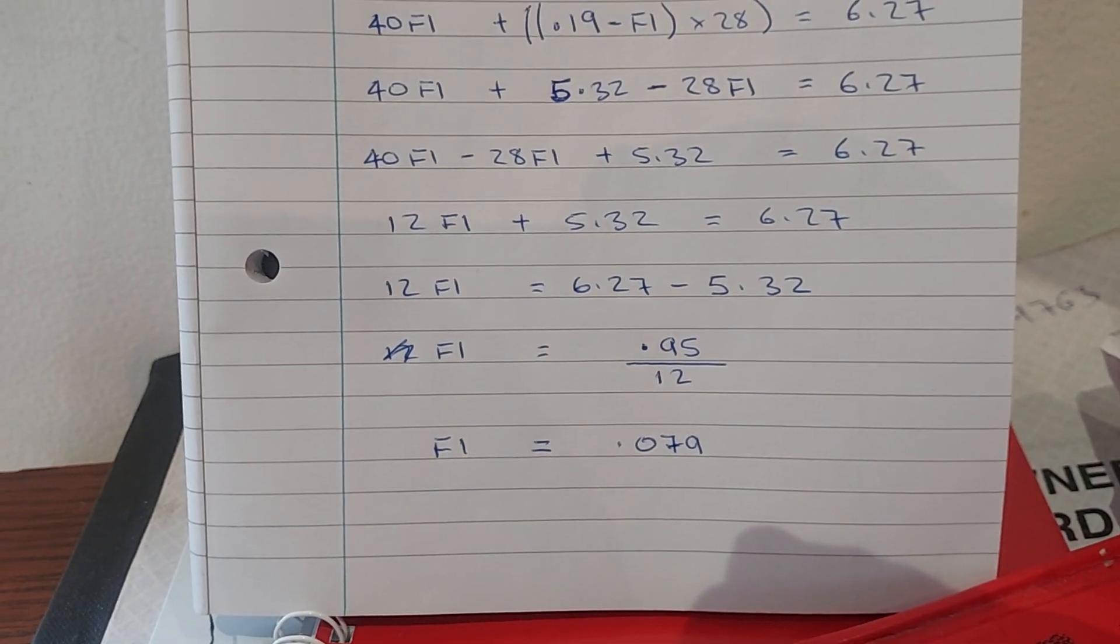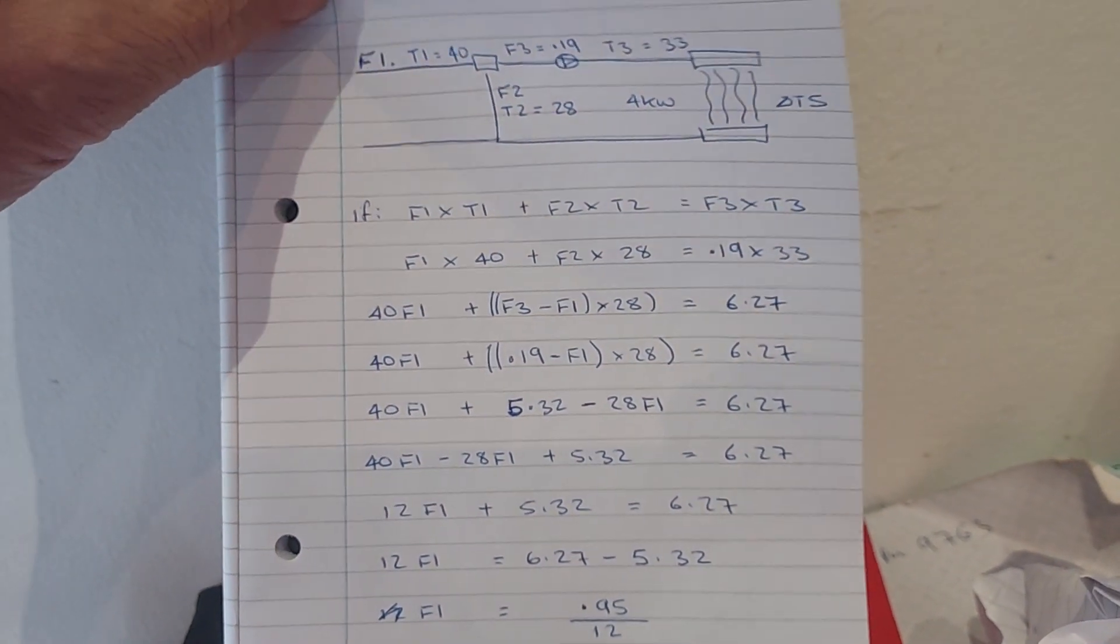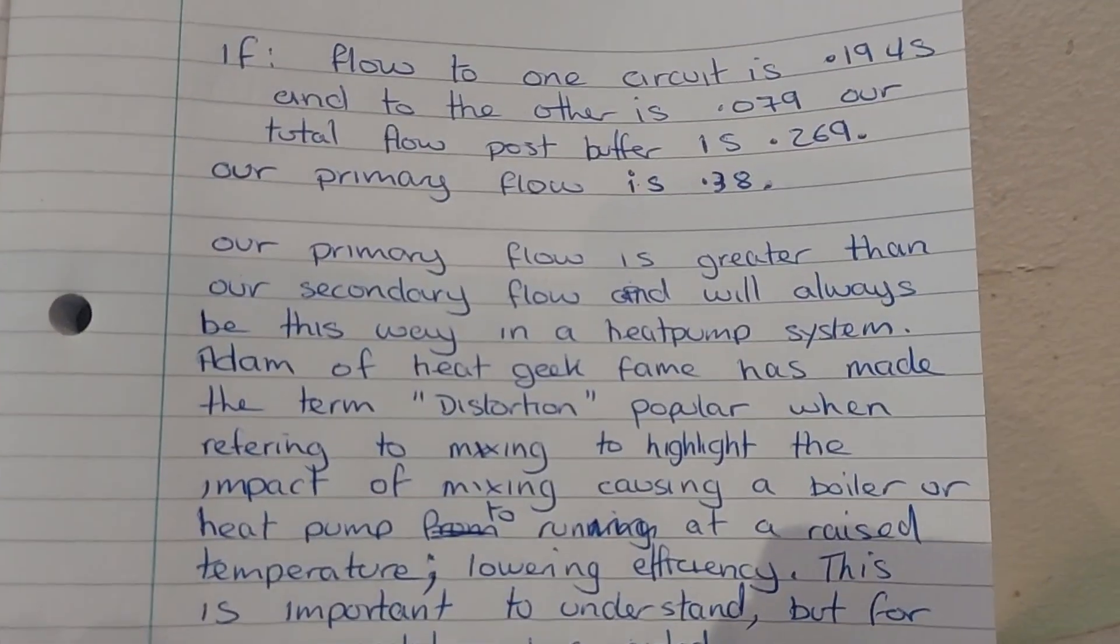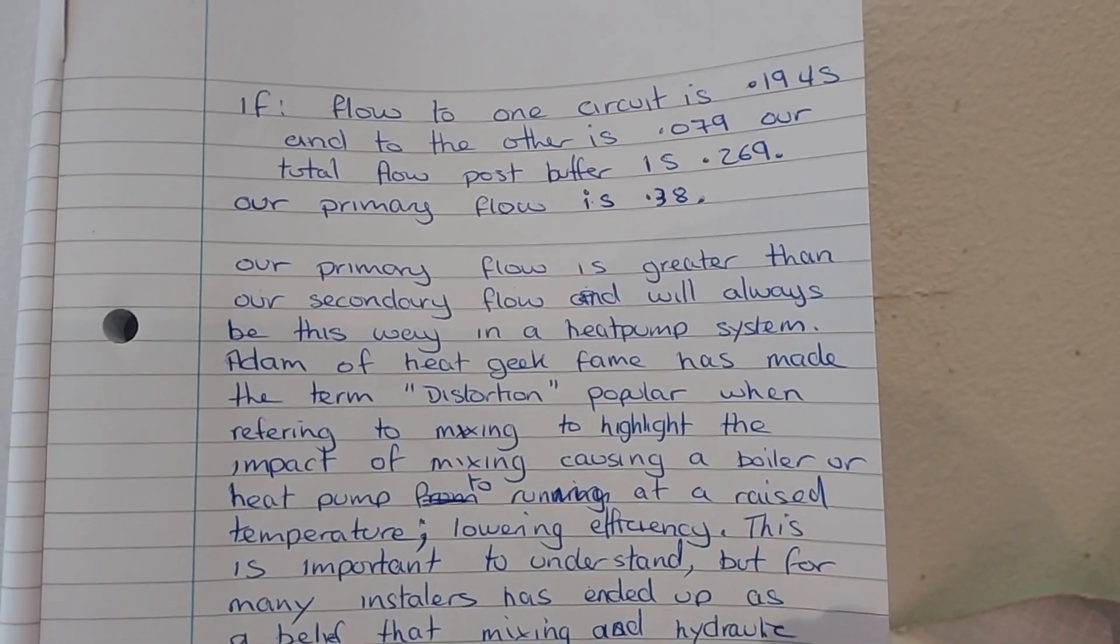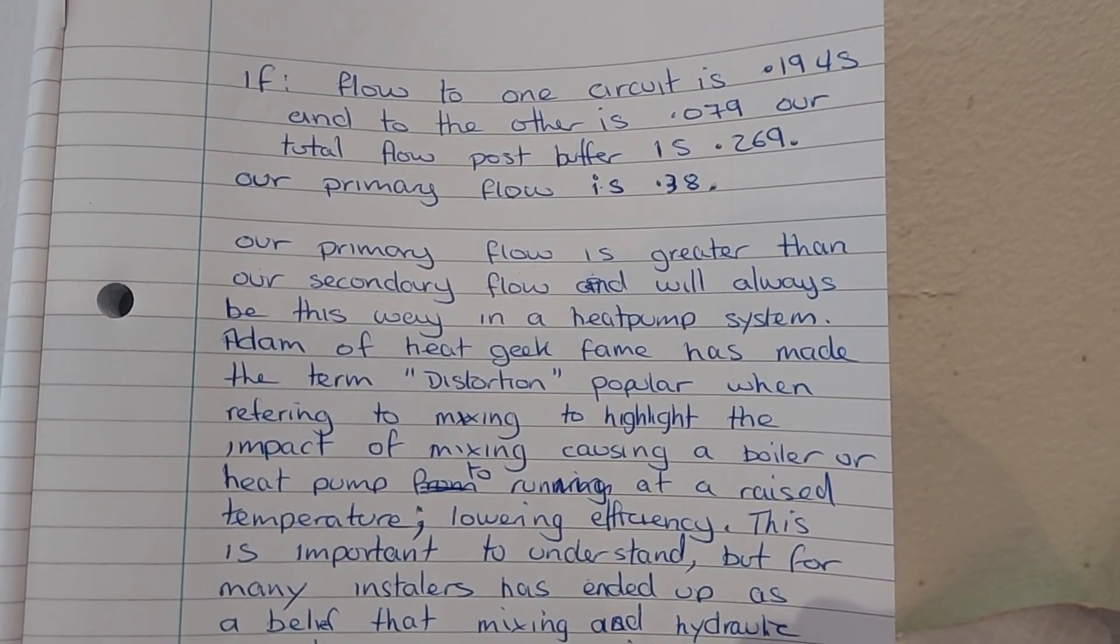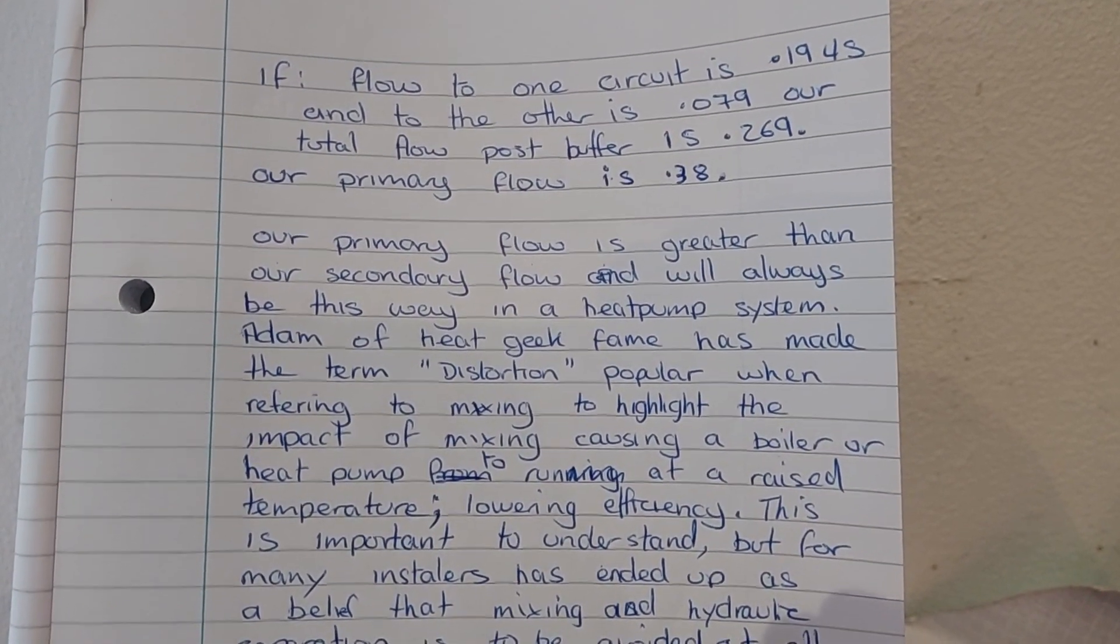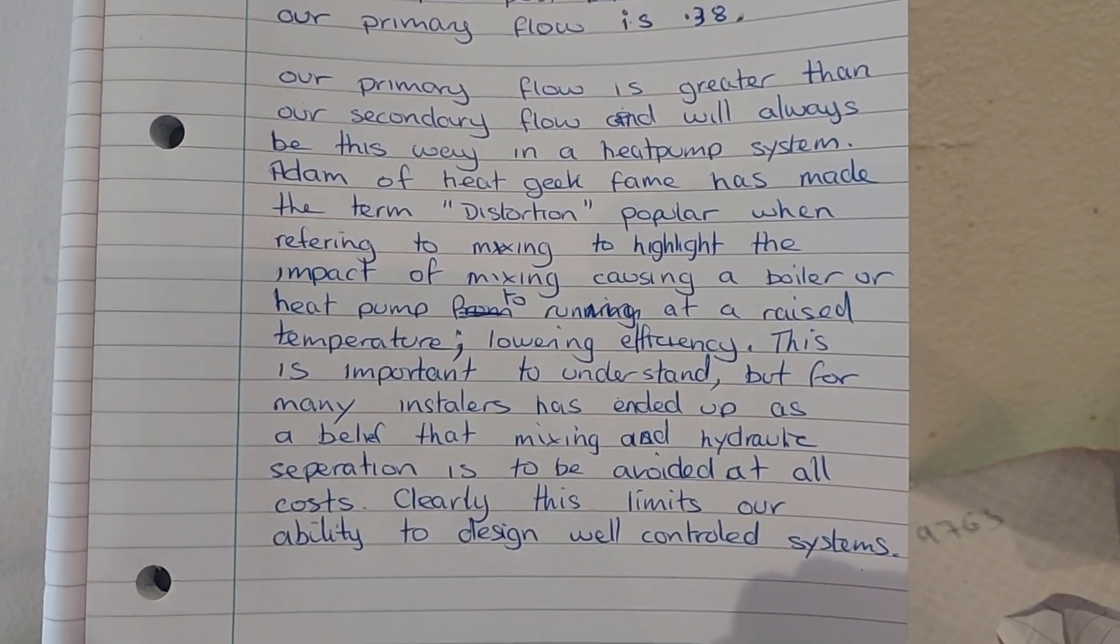If you want to go through that a few times to learn the formula, you're welcome. Or if you want to give me a call if you need to use it, I'll try and spare some time to go through the equation. From here, if flow to one circuit is 0.19 litres per second, which is our higher temperature circuit, and the other is 0.079, our total flow post-buffer is 0.269 and our primary flow is 0.38. Our primary flow is greater than our secondary flow and will always be the way in a heat pump system.